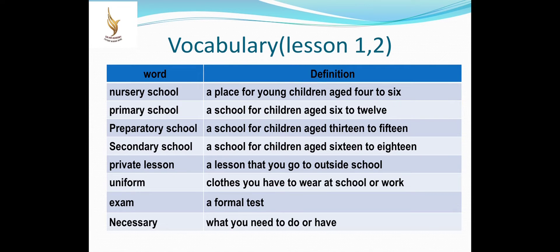Let's start. Nursery school, this is a place for children aged 4 to 6. Primary school, school for children aged 6 to 12. Prep school, for children between 13 and 15. Secondary school, a school for children between 16 and 18 usually. What is a private lesson? It's a lesson that you go outside school. Uniform, cloth that you have to wear at school or at work. Exam is a formal test. Necessary. We call something necessary when we need to do it or need to have it.